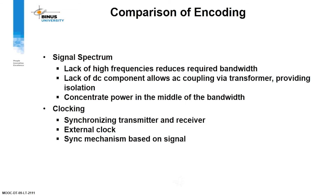Comparison of encoding — signal spectrum: Lack of high frequencies reduces the required bandwidth. Lack of DC component allows AC coupling via transformer, providing isolation. Power is concentrated in the middle of the bandwidth. Clocking: synchronizing transmitter and receiver can use an external clock or a sync mechanism based on the signal itself.